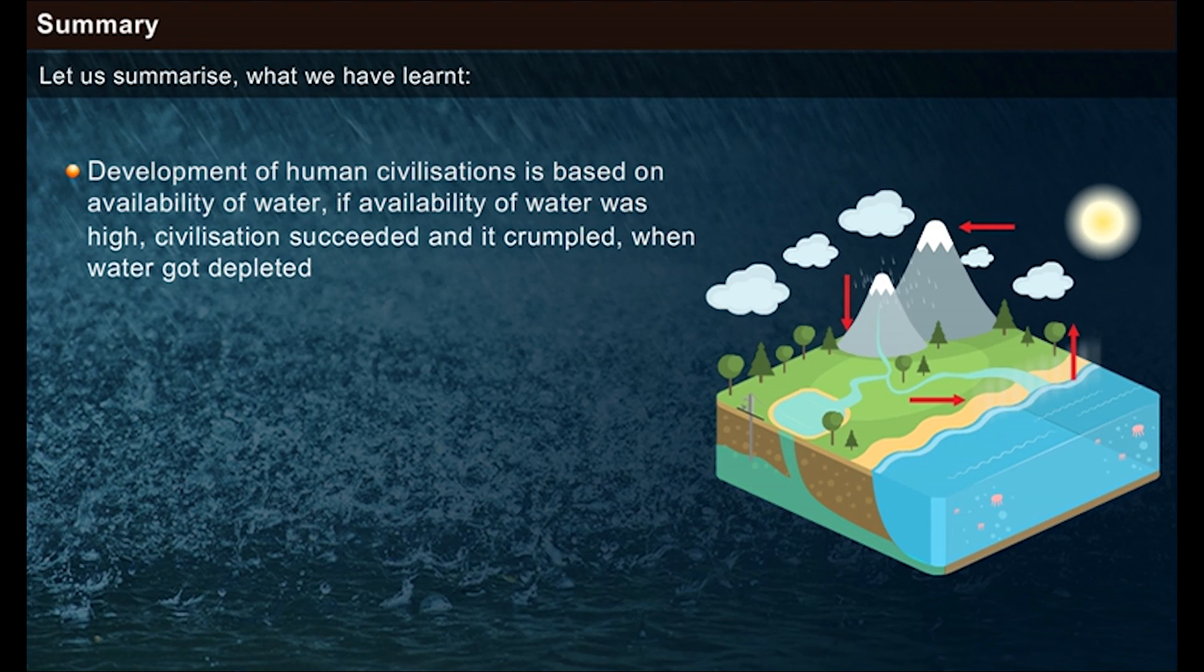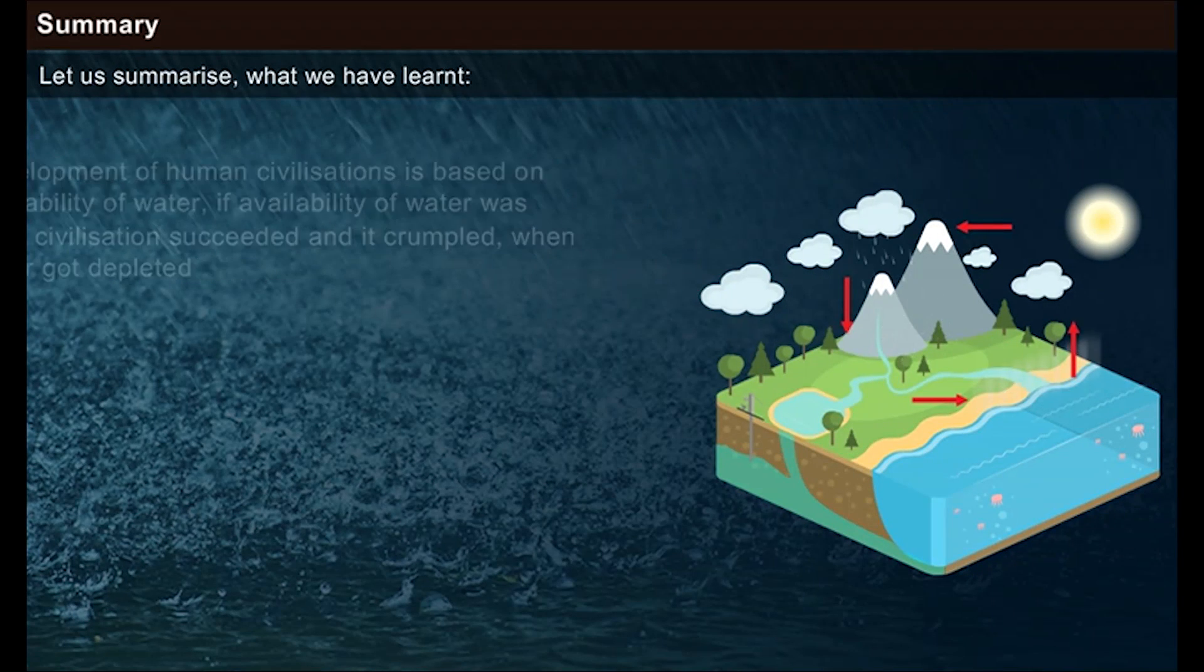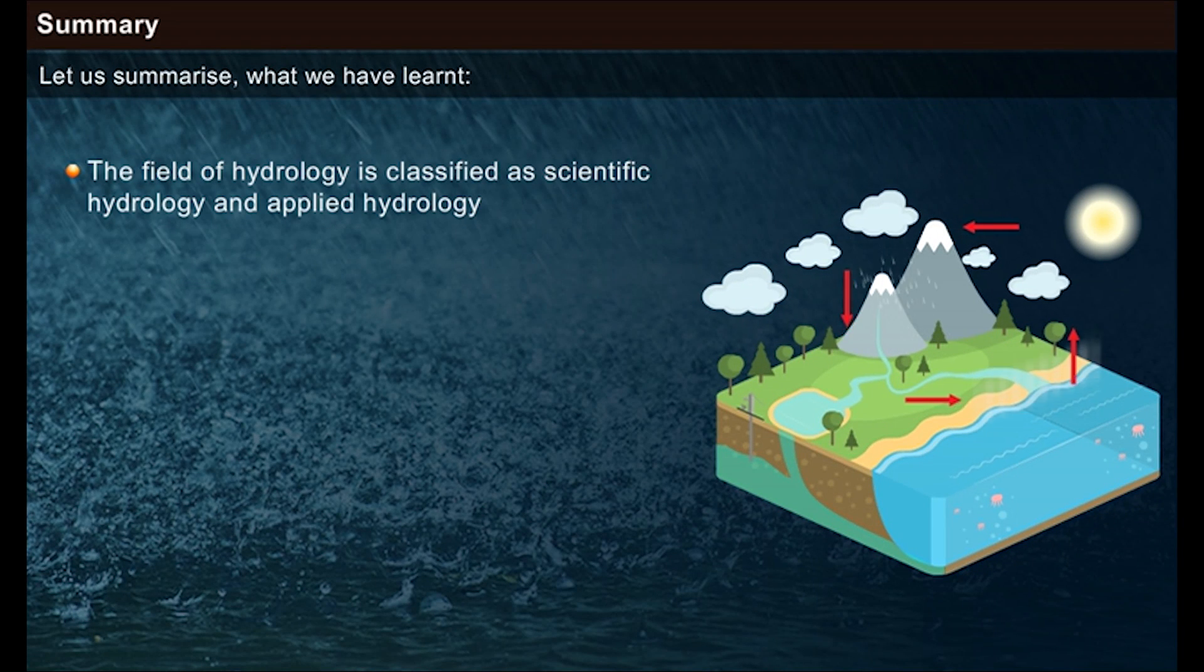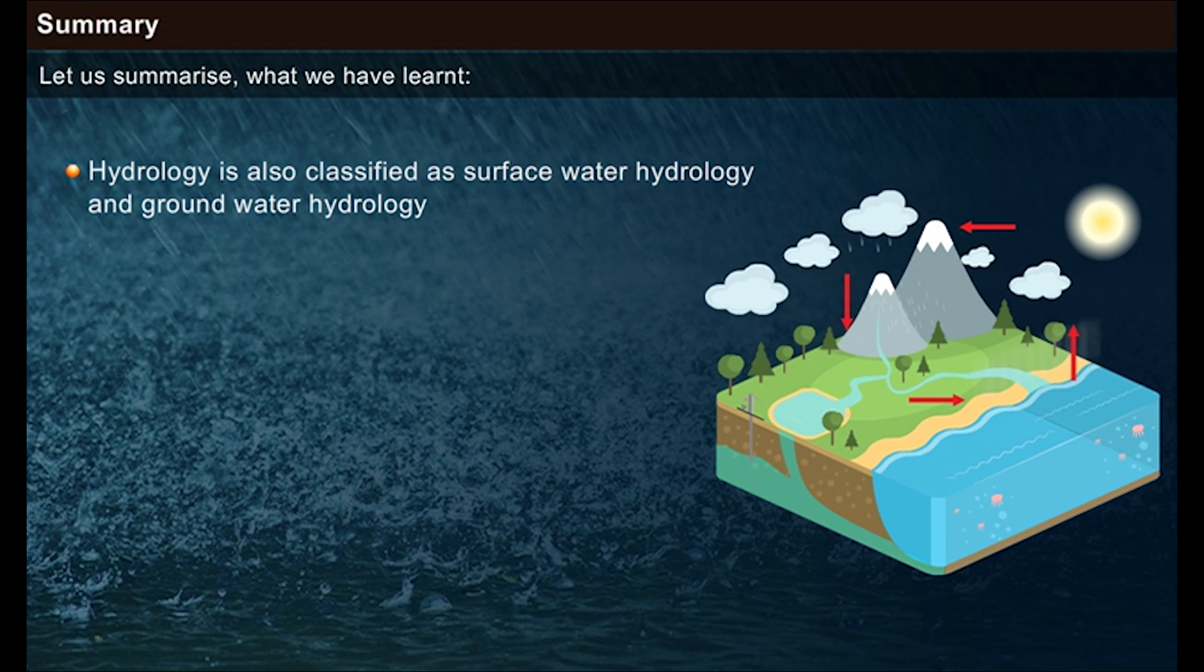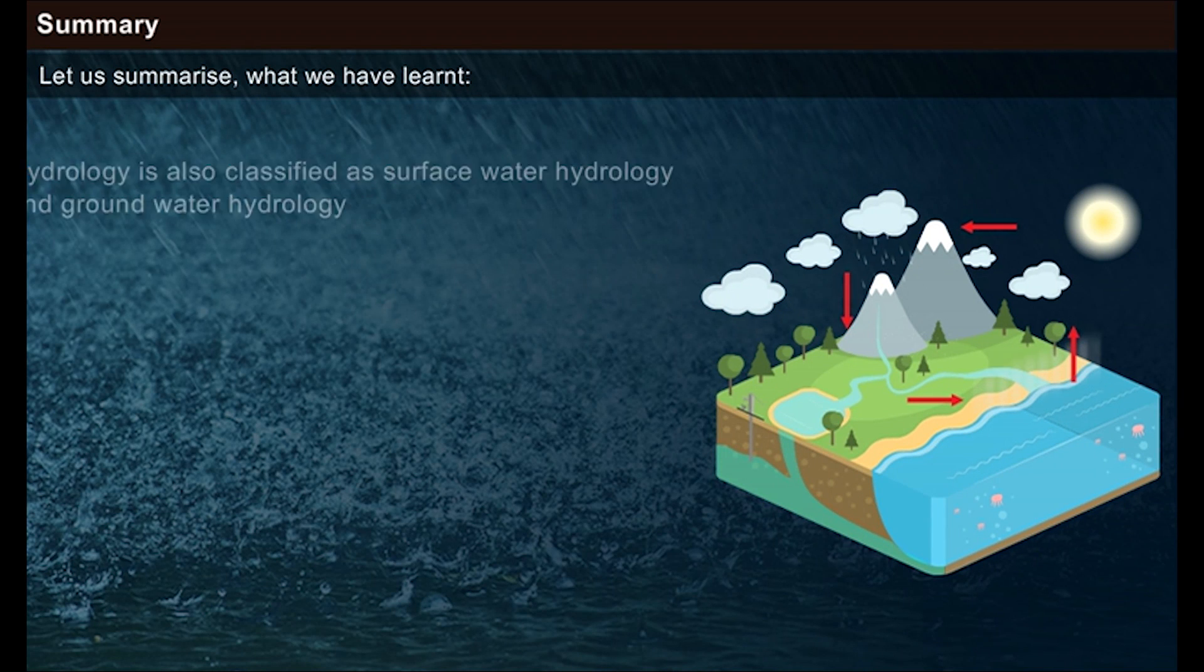From the history, it is clear that development of human civilizations is based on availability of water. If availability of water was high, civilization succeeded and it crumpled when water got depleted. The field of hydrology is classified as scientific hydrology and applied hydrology.